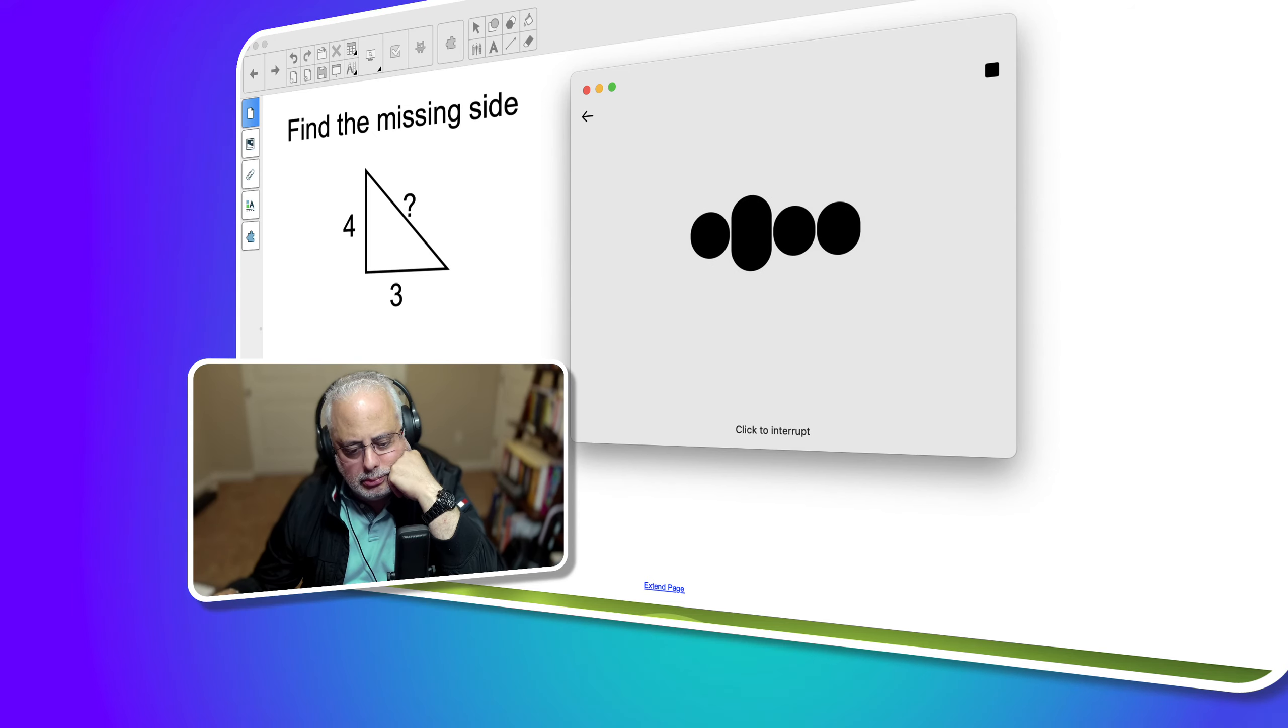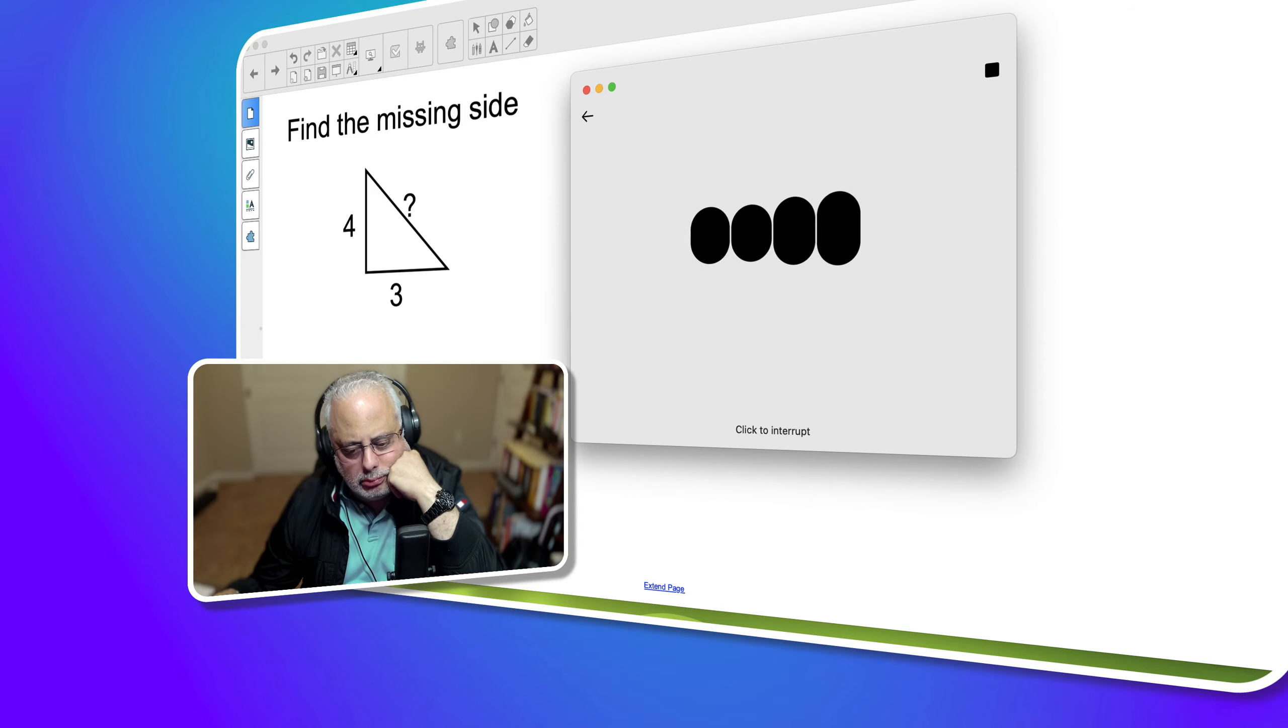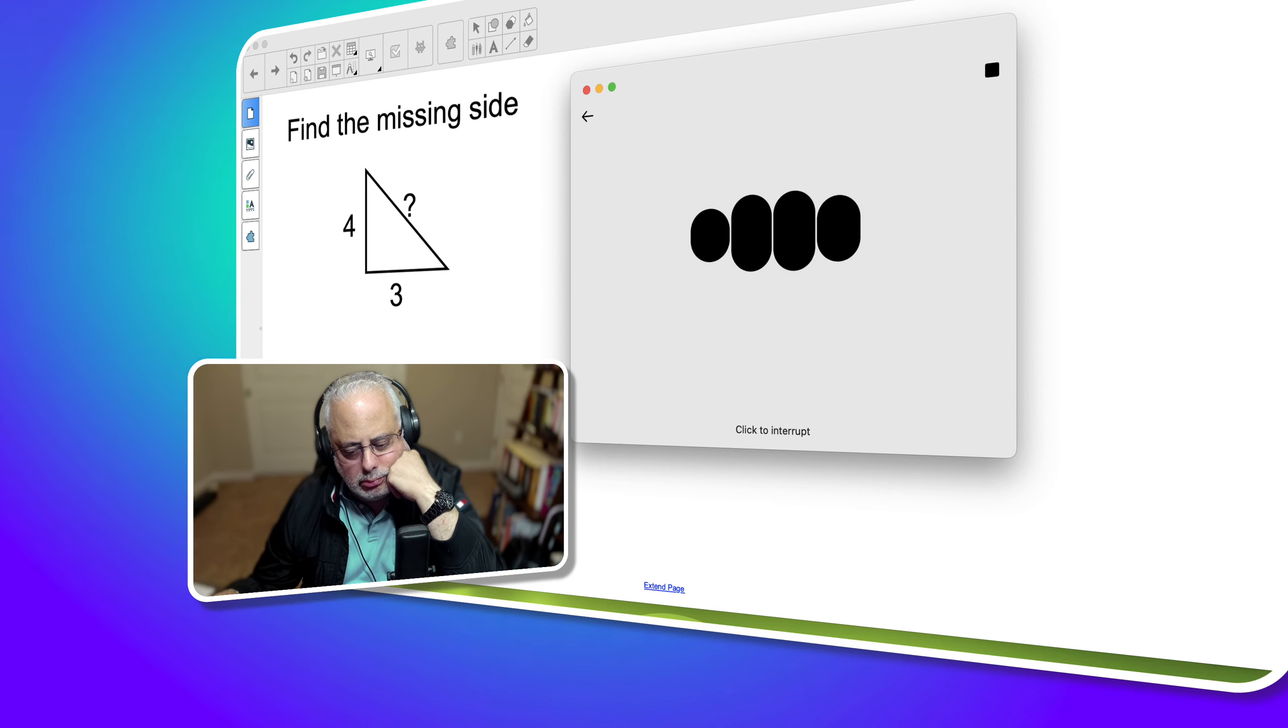This simplifies to 16 plus 9 equals 25 equals c². To find c, take the square root of both sides. c equals square root of 25. So the length of the hypotenuse is 5.